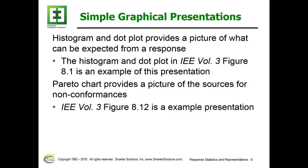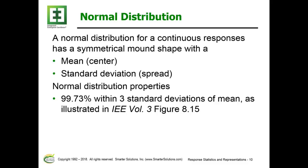A Pareto chart provides a picture of the sources for non-conformances, as shown in Figure 8.12. A normal distribution for a continuous response has a bell shape with a center — that's the mean value — and the spread is represented by standard deviation.